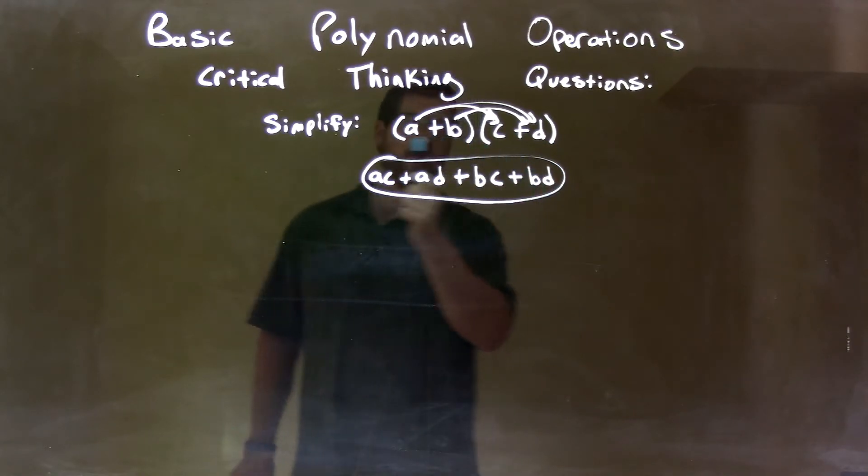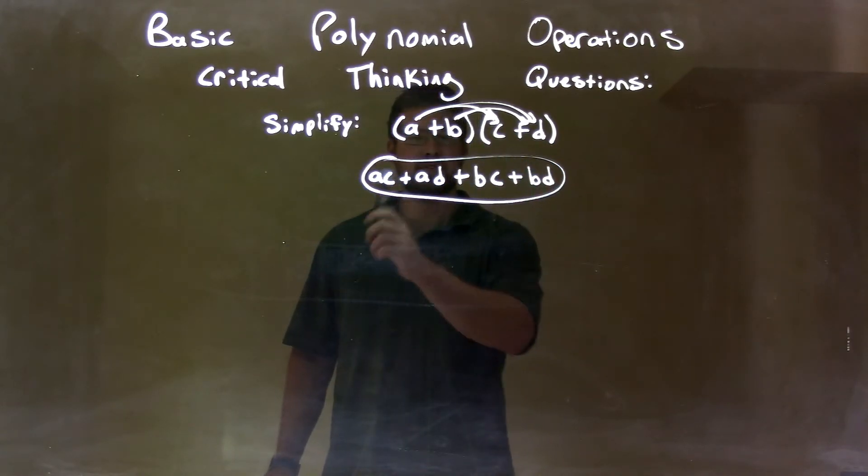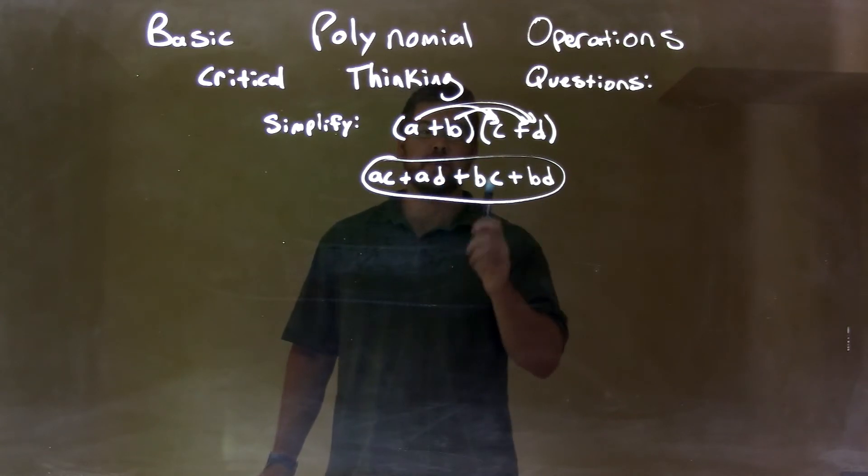And so, our final answer here is just ac + ad + bc + bd.